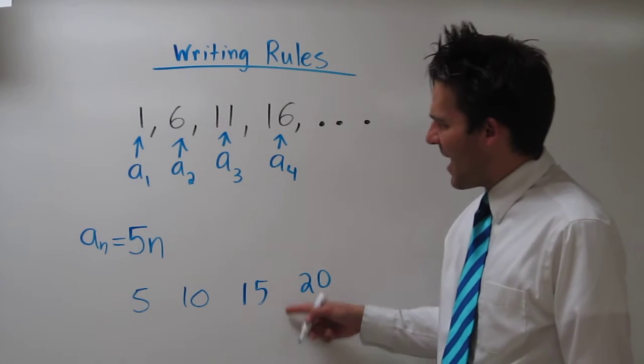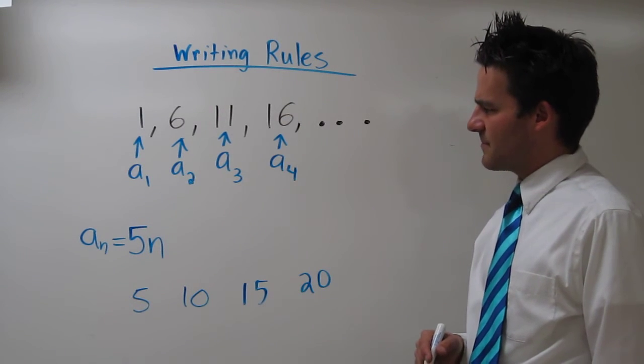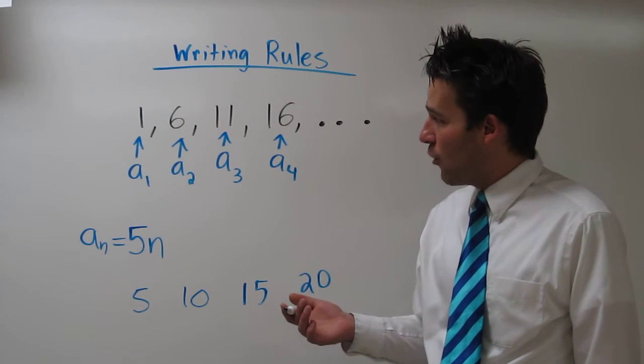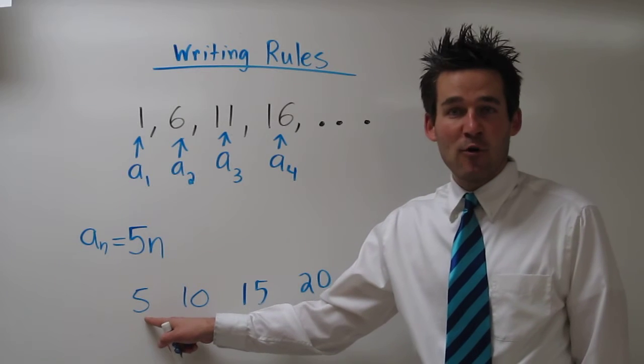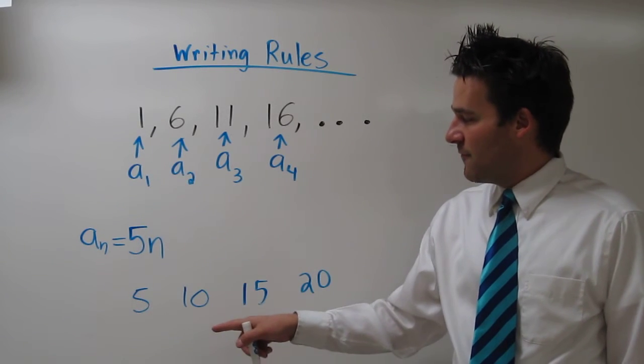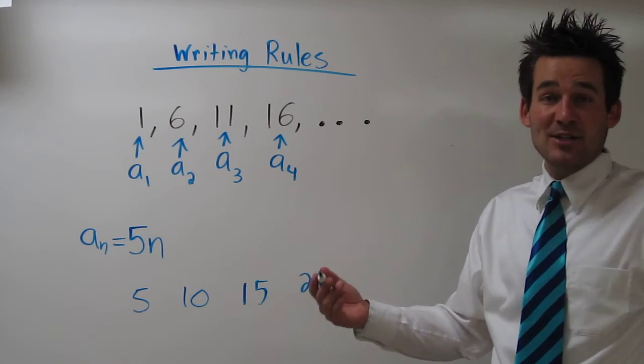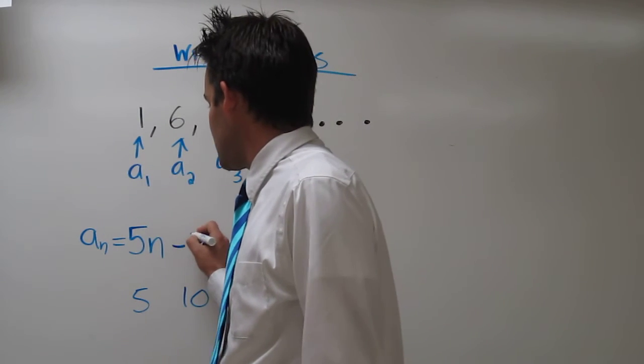These numbers are kind of close to these numbers, but it looks like they're each off by 4. If we subtract 4 from 5, we'll get to the 1. If we subtract 4 from 10, we'll get to the 6. So I think we can adjust our rule by simply subtracting 4.